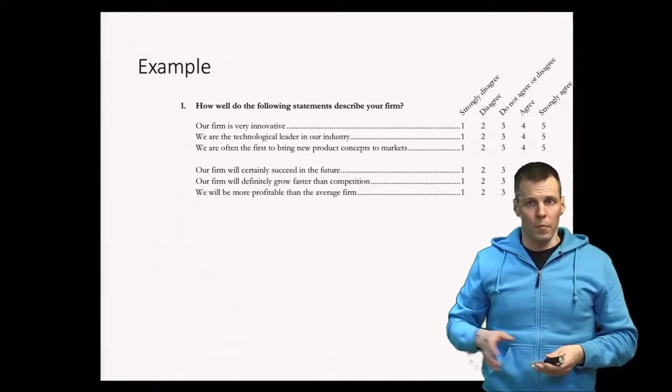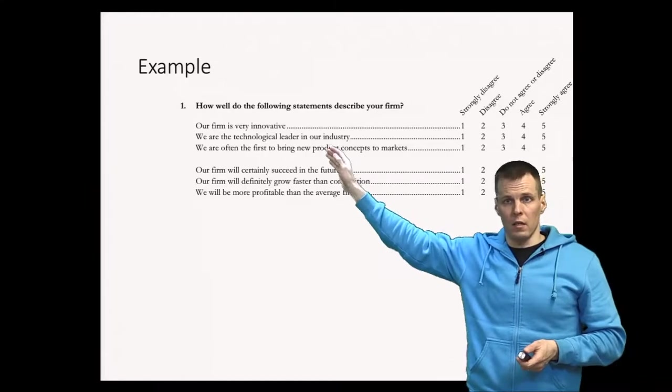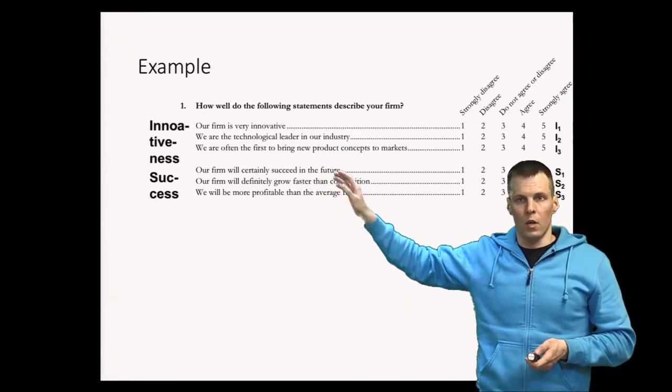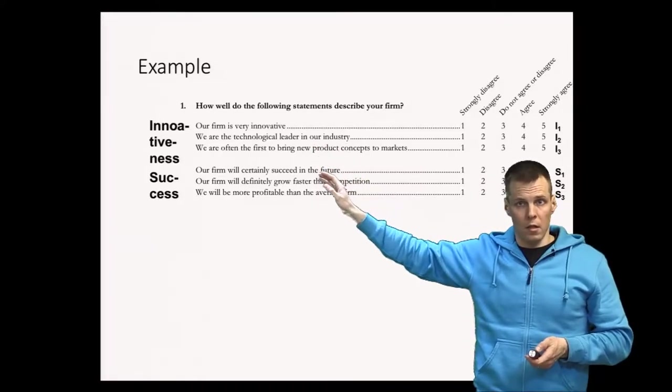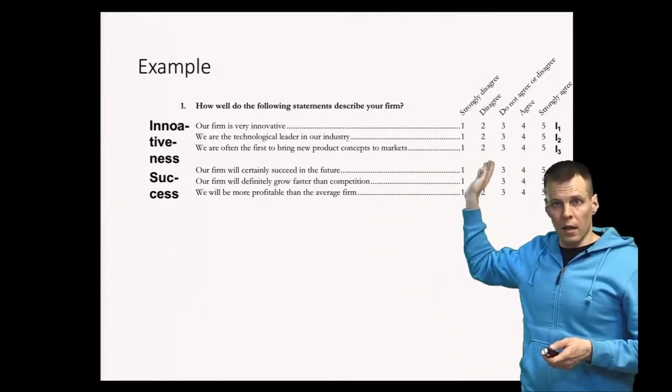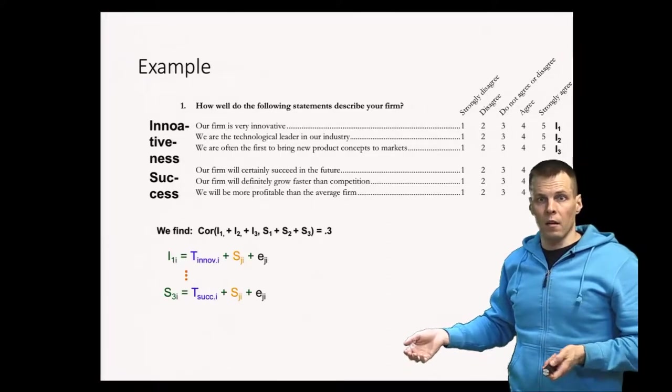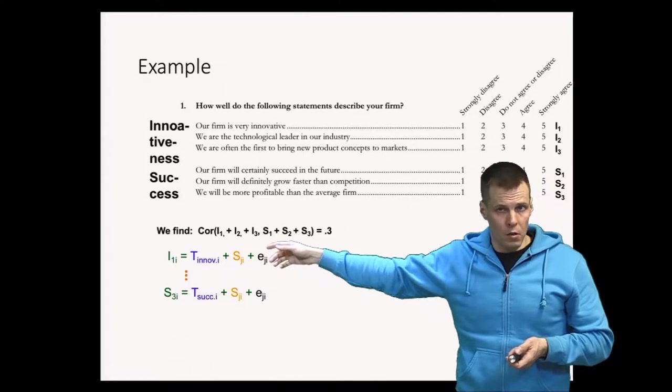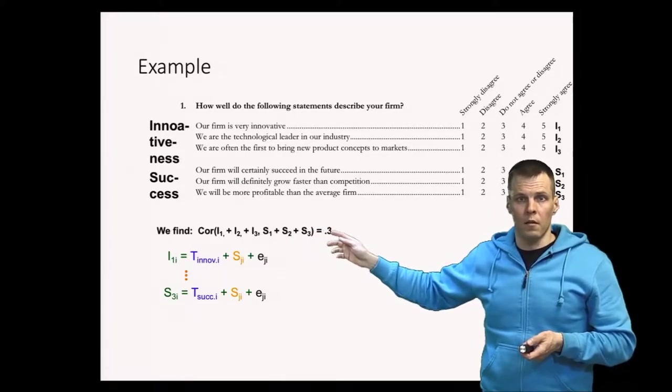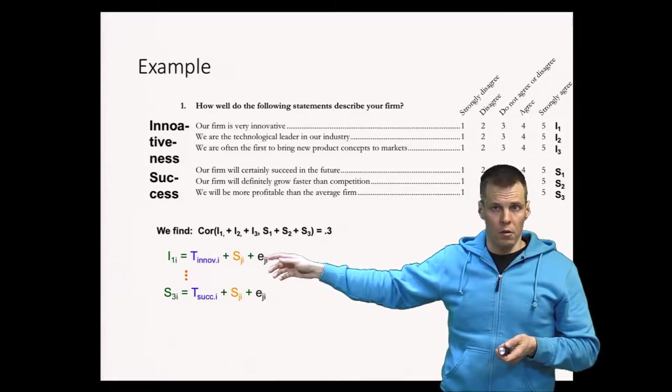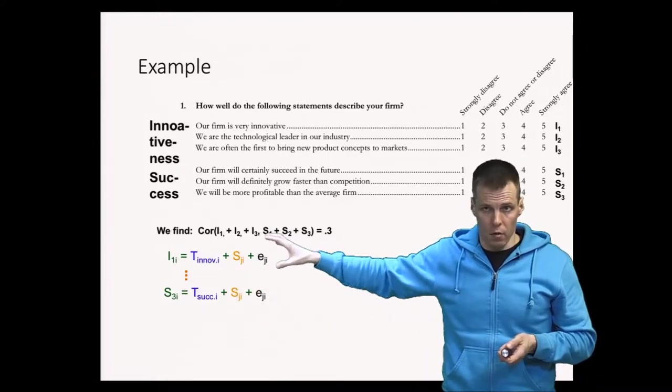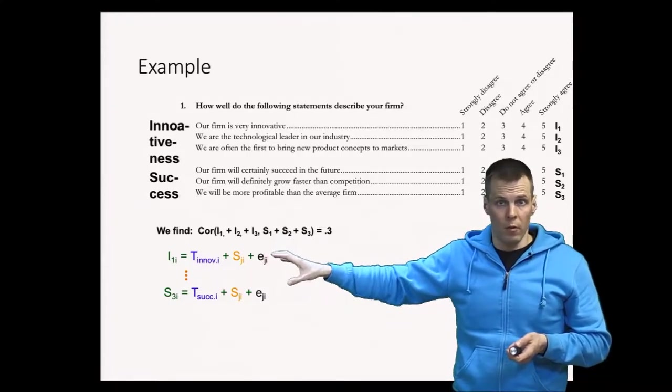Let's take a look at what common method variance is about. Here's our example. We have three questions that are supposed to measure innovativeness and three questions that are supposed to measure performance or success of a company. So we have innovation questions I1, I2, and I3, and success questions S1, S2, and S3. We follow the common practice of taking some of these innovation indicators and some of these success indicators, and we find that the correlation is 0.3. We assume that these innovation indicators measure innovativeness, these success indicators measure success, and there could be some other variance components or random noise and some item-specific variation in the data.